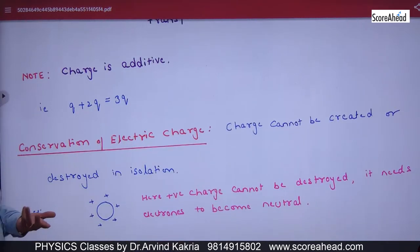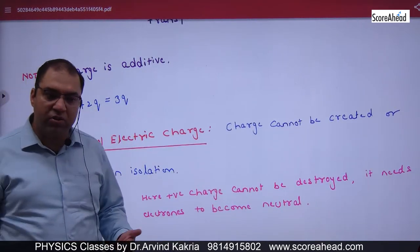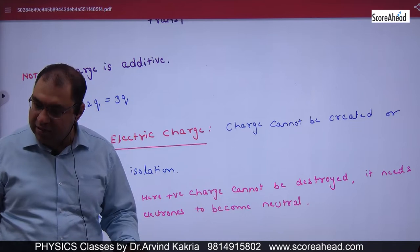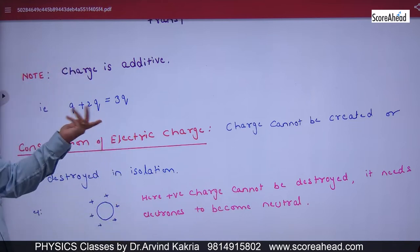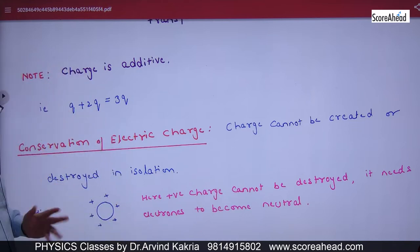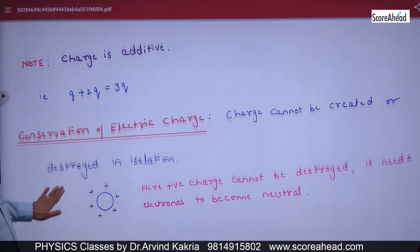Next is Charge Additive — you can add and subtract charges. For example, Q plus 2Q will give 3Q. That is this method.